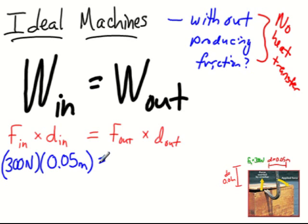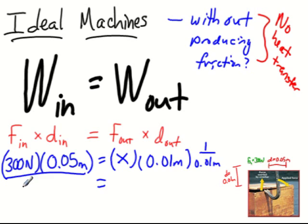Put our equal sign to get the work out. The work out force we do not know—we'll use the symbol X—and we're going to multiply that by the distance out, which is one hundredth of a meter. Using some algebra, we can divide both sides by one hundredth of a meter.